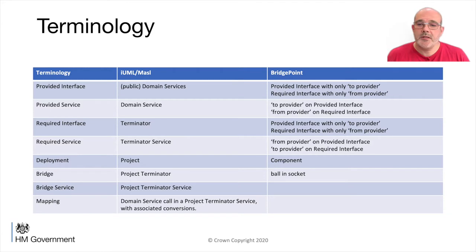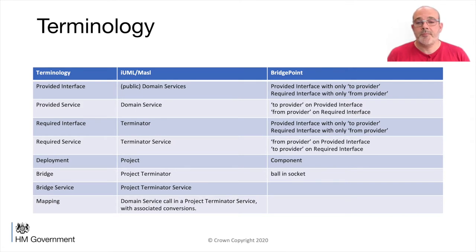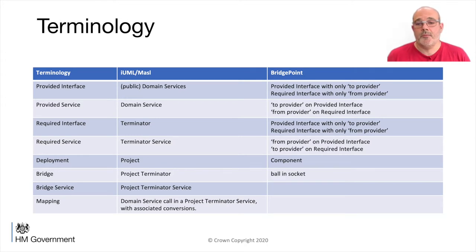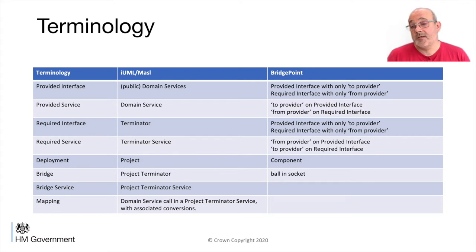A quick look at terminology I'm going to be using. In Bridgepoint, an interface is bidirectional - you can have signals or operations going to or from the provider. But for today, I'm only talking about unidirectional bridges. So when I say a provided interface, in Bridgepoint terms that would be a provided interface with only provider operations and signals, or a required interface with only from-provider operations or signals. In MASL terms, that would be a collection of domain services. A provided service would be a domain service in MASL, and a required interface would be a terminator, with a required service being a terminator service.